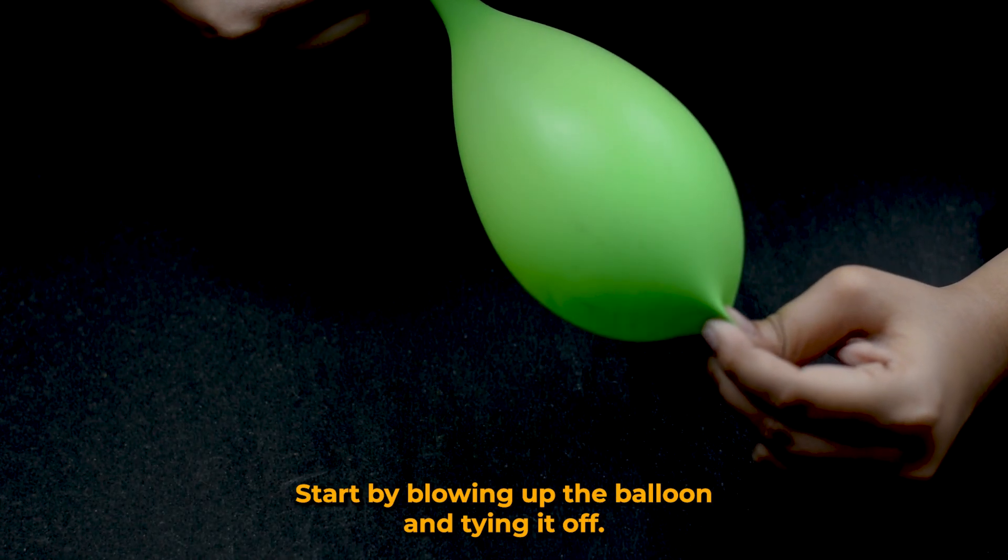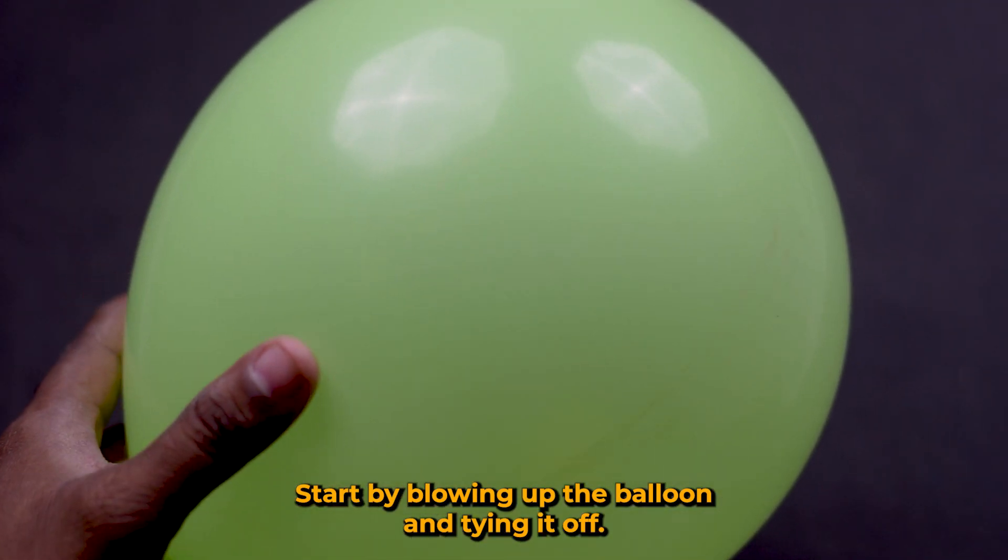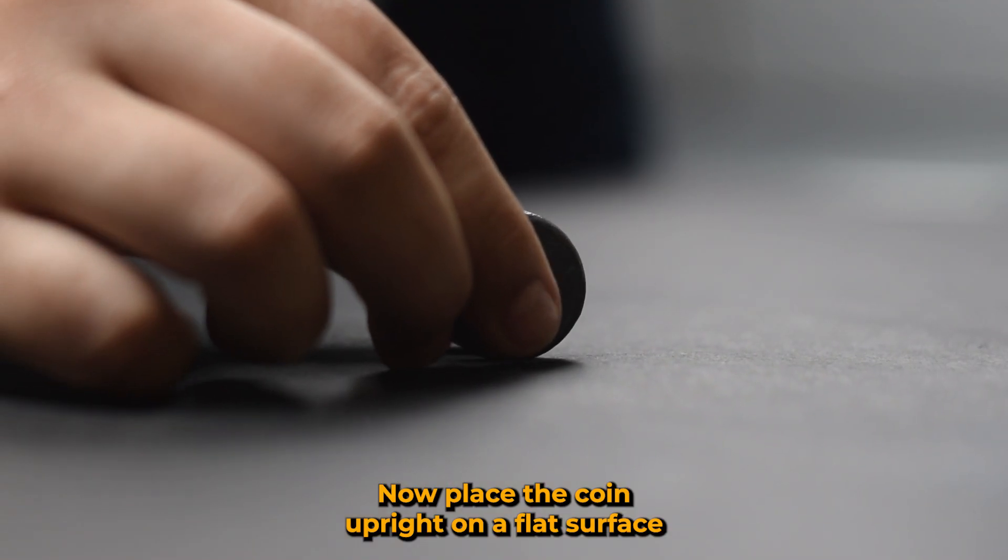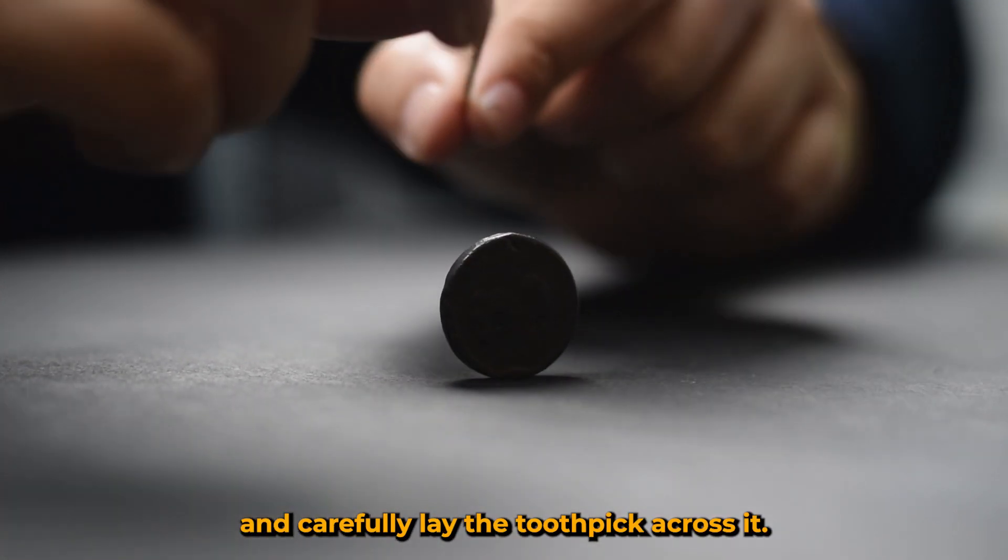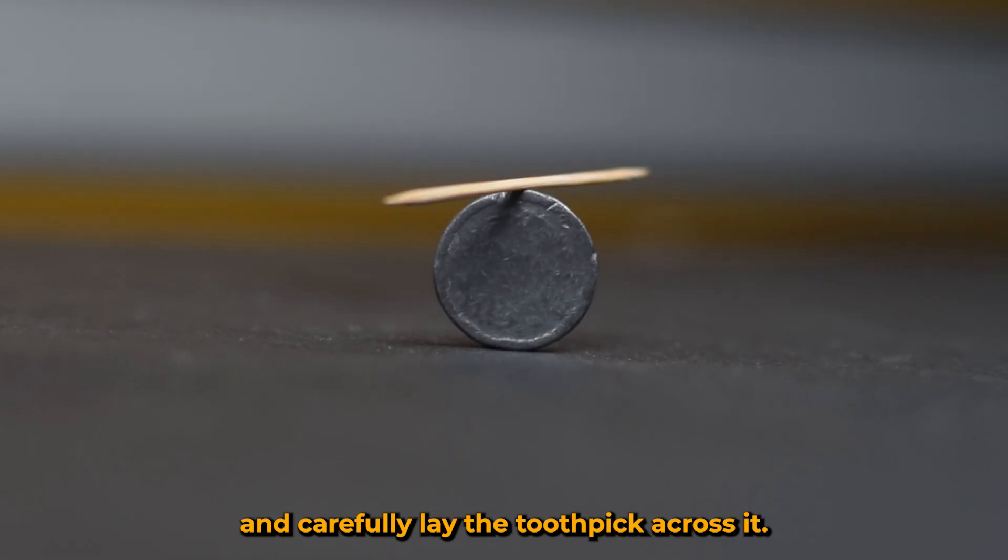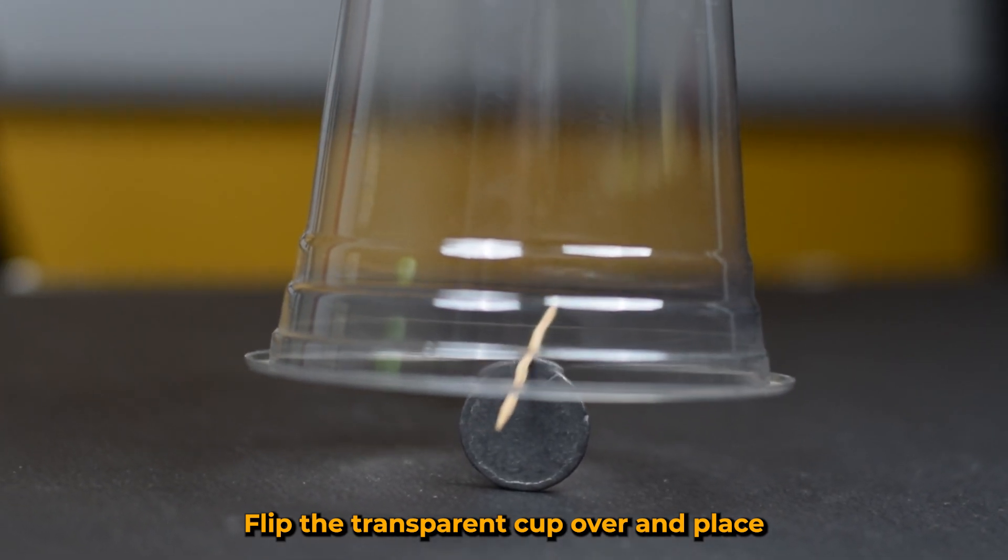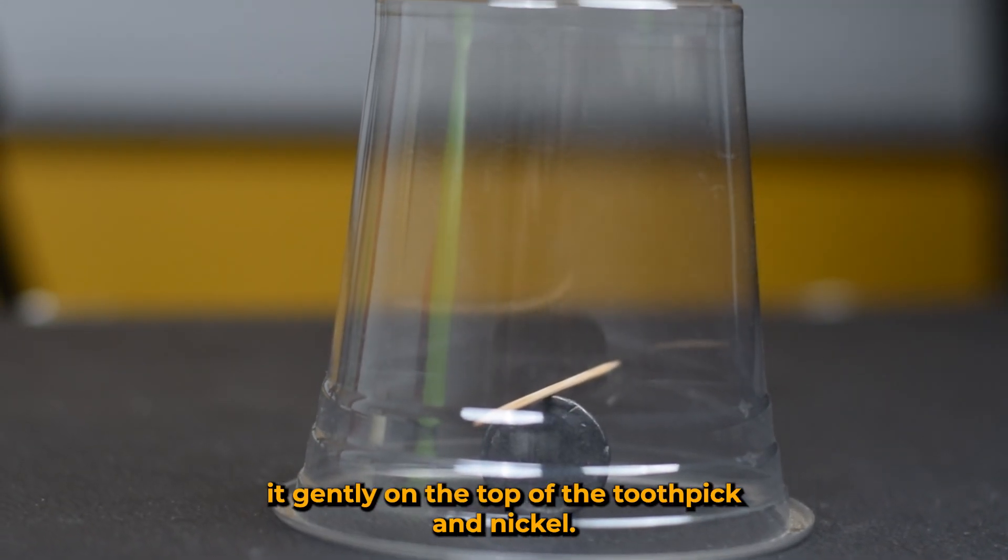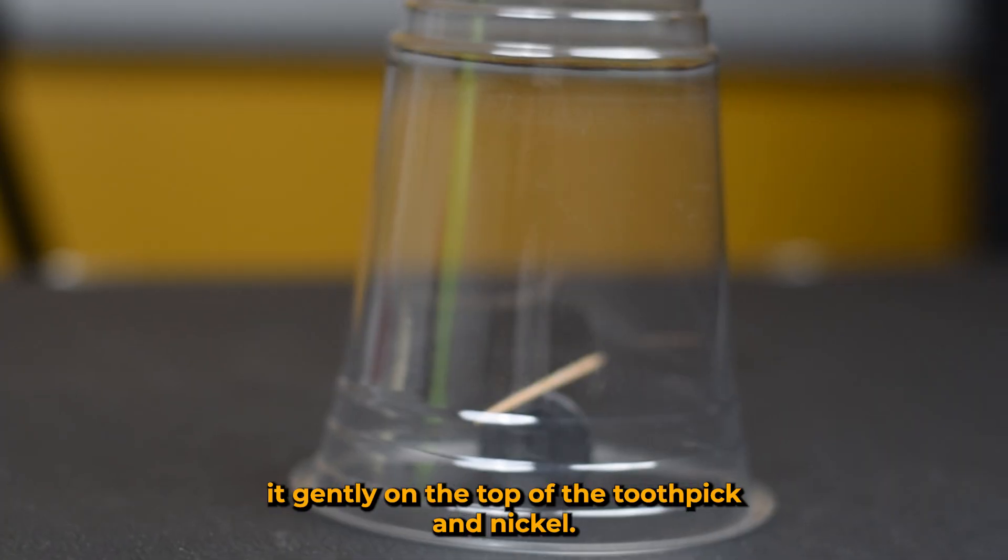Start by blowing up the balloon and tying it off. Now place the coin upright on a flat surface and carefully lay the toothpick across it. Flip the transparent cup over and place it gently on the top of the toothpick and nickel.